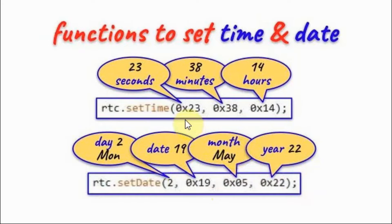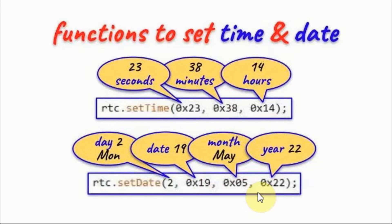The third argument sets the month and the fourth sets the year. The values for seconds, minutes, hours, date, month, and year are all in binary coded decimal.